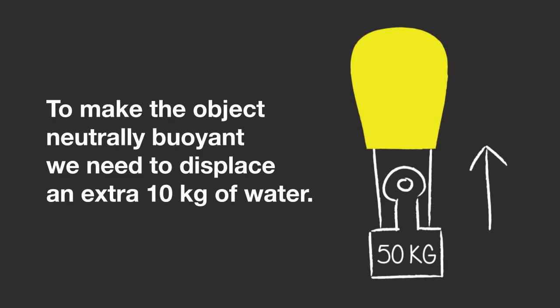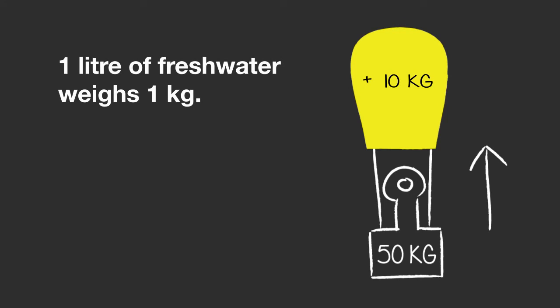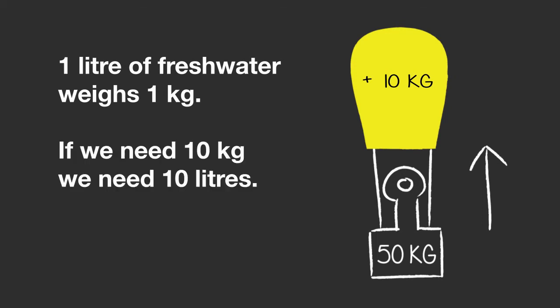Suppose we want to bring this object up with a lift bag. To make the object neutrally buoyant we need to add enough air to the lift bag to displace this extra 10 kg of water. How many liters is 10 kg of freshwater? Well, 1 liter of freshwater weighs 1 kg, so we need 10 liters. 10 kg divided by 1 equals 10.